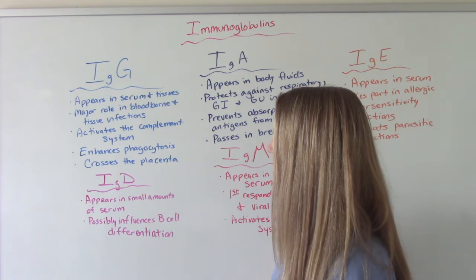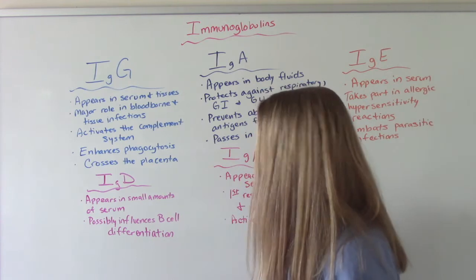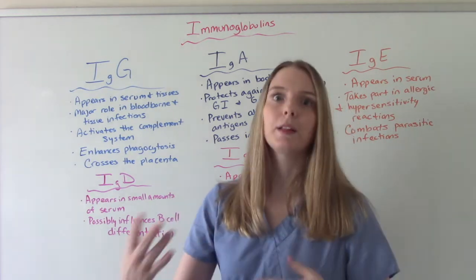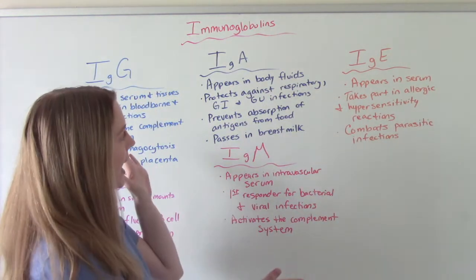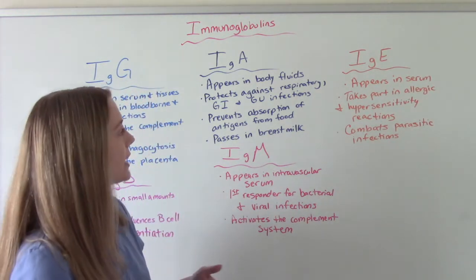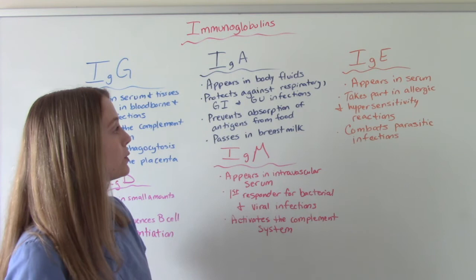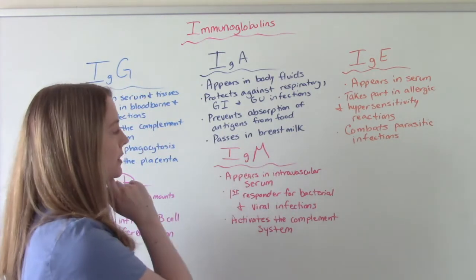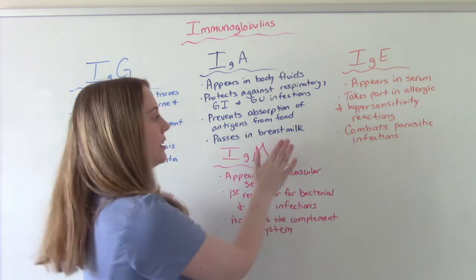IgD appears in small amounts in serum and its function is a little unclear. The idea is that it influences B-cell differentiation — the B-cells turning into plasma cells. IgA is a special one. It appears in body fluids like sweat, tears, and mucus. It protects against respiratory, GI, and GU infections and helps prevent absorption of antigens from food. What's special about IgA is it passes through breast milk — so when we talk about breastfeeding babies getting antibodies, we're talking about IgA.